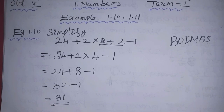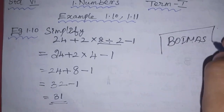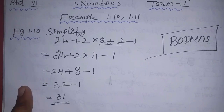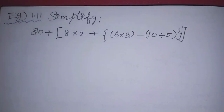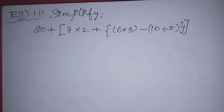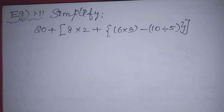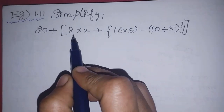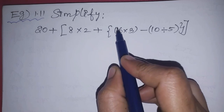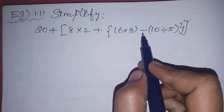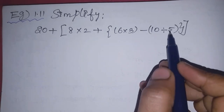Clear? Now, next is example 1.11. If you understood example 1.10, you will clearly understand how to do this one as well. It is a little more complex. The expression is: 20 plus [8 into 2 plus {6 into 3 minus (10 divided by 5)}]. Here, we have a square bracket, a curly bracket, and a small bracket (parenthesis).